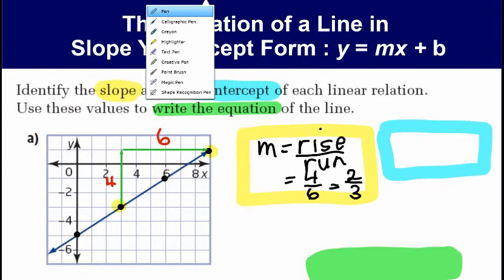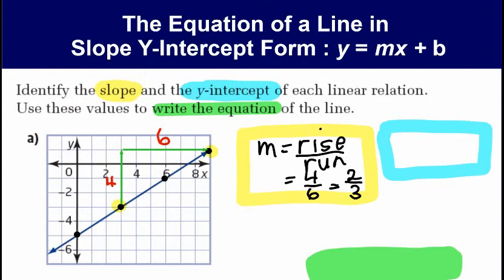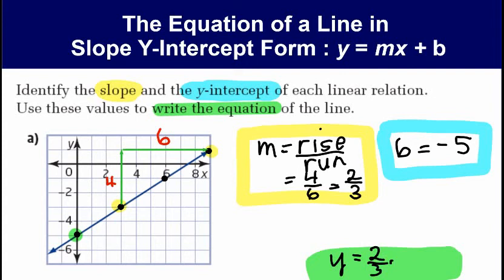Moving on to the y-intercept: as we saw in the previous unit, if we have a graph it's as simple as finding where the line crosses the vertical y-axis. Looking at this graph, it's crossing at negative 5, so b equals negative 5. When it comes time to write the equation of the line, we take the slope and y-intercept and write them in slope y-intercept form: y equals two-thirds x minus 5. That's the equation. The first example is done.